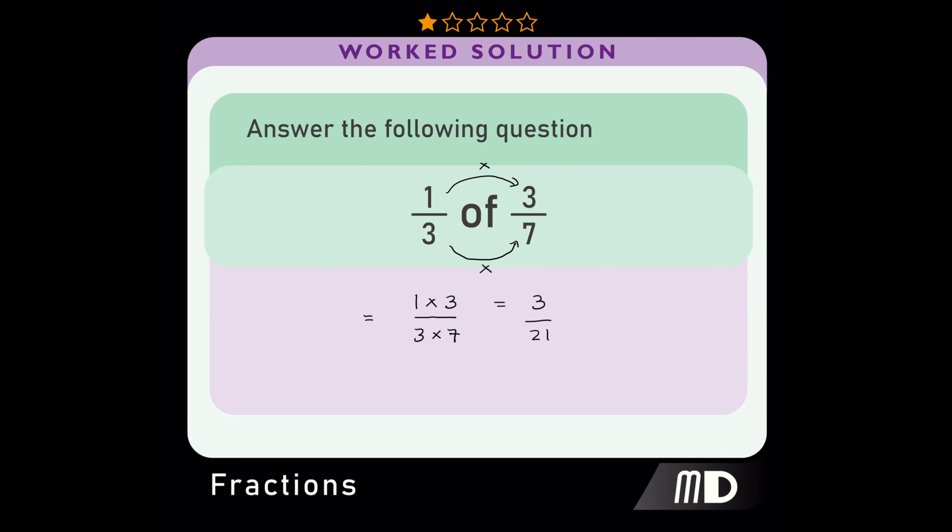Remember, the highest common factor of three and twenty-one is three. Three divided by three is one, and twenty-one divided by three is seven.